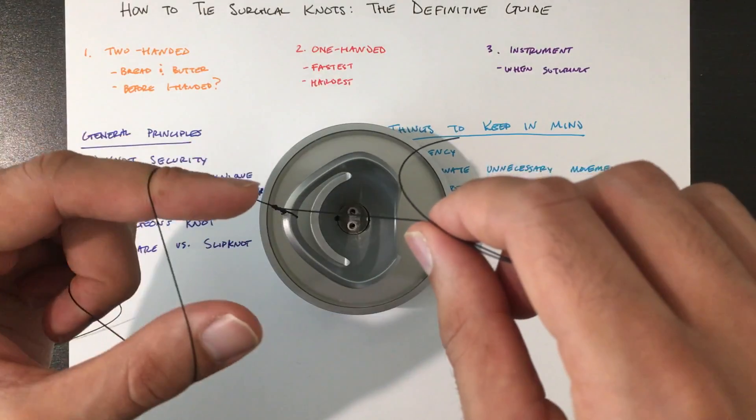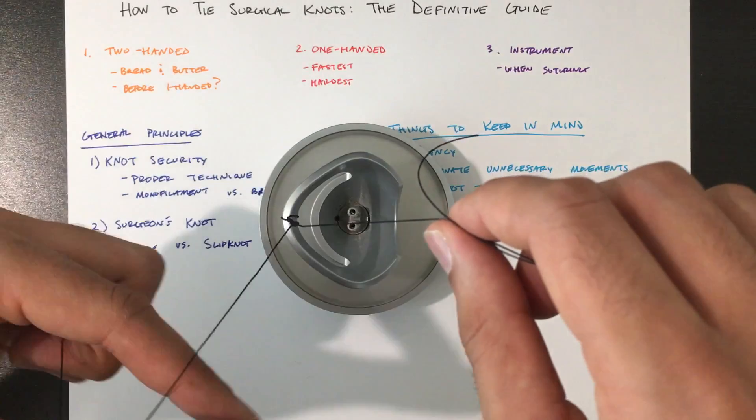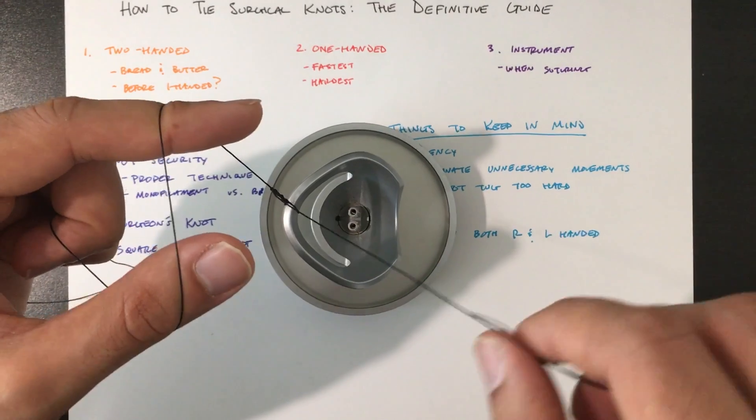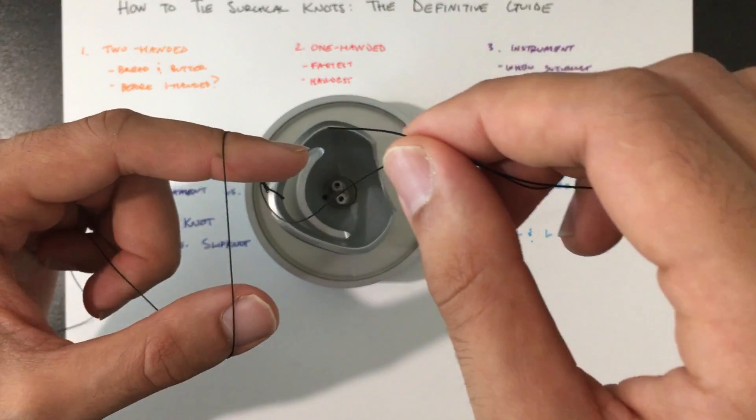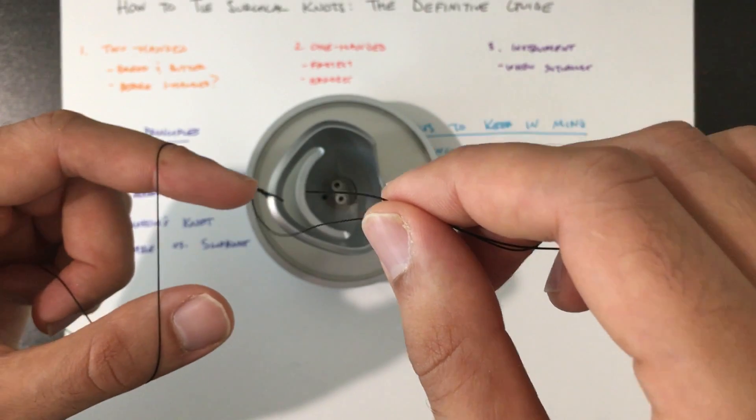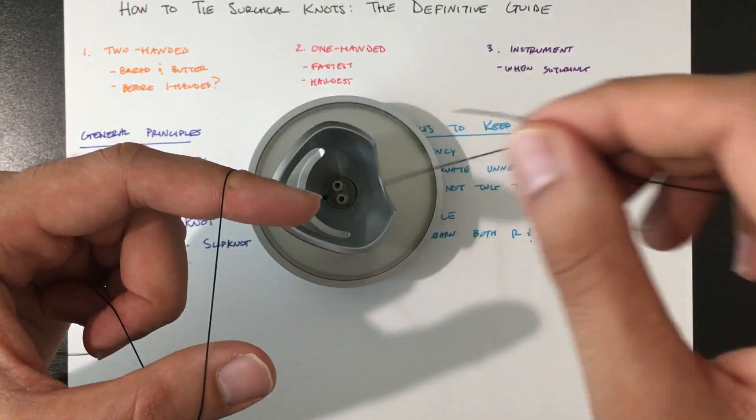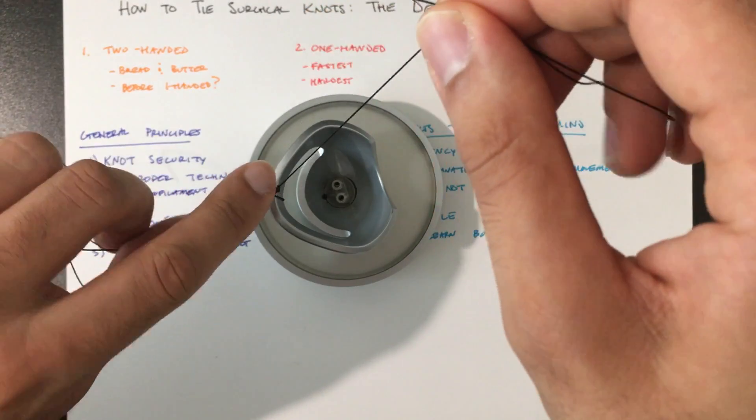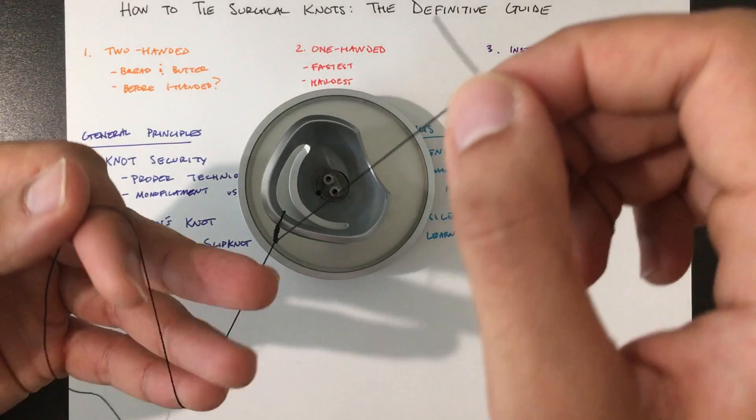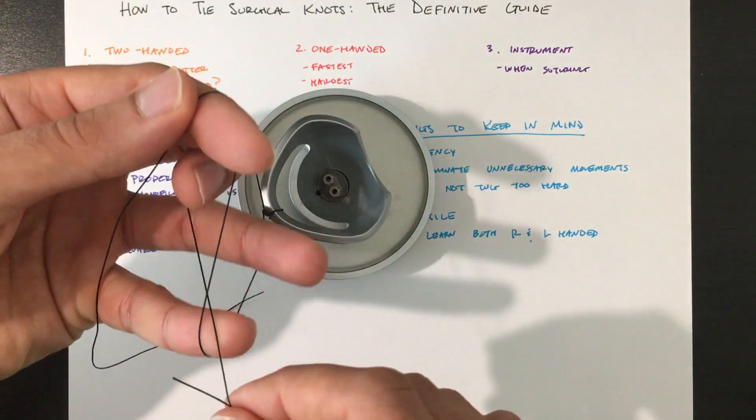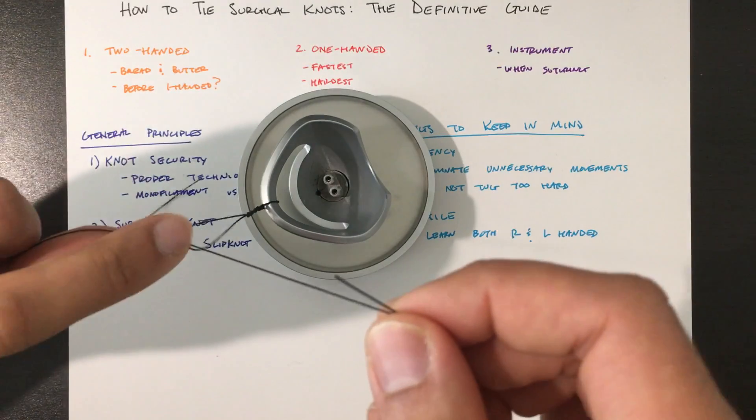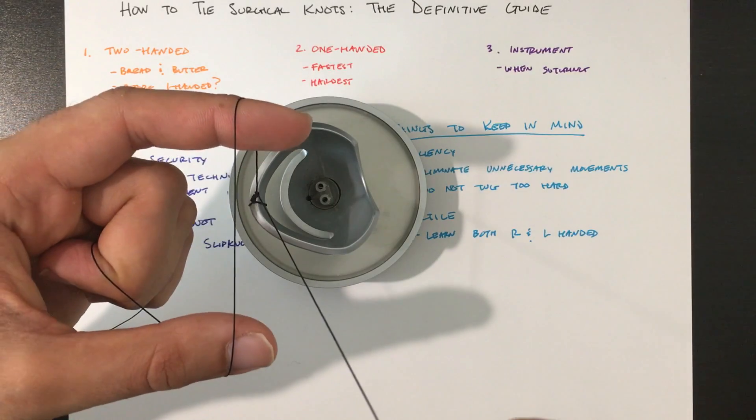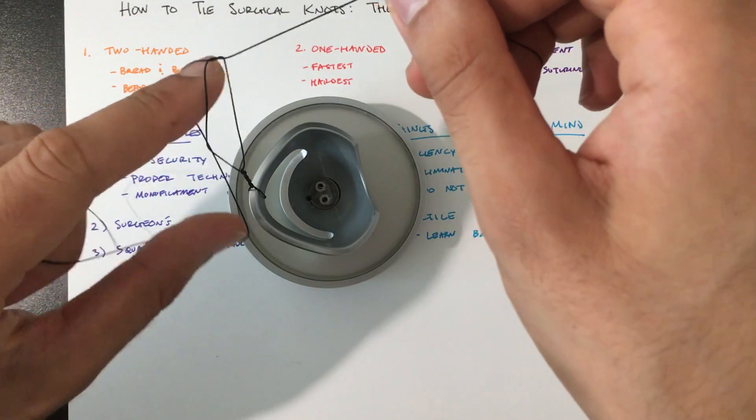Now again we have the gun. Opposite direction. And wrap it around. So one more time. Book. Opposite direction. Pull it through.